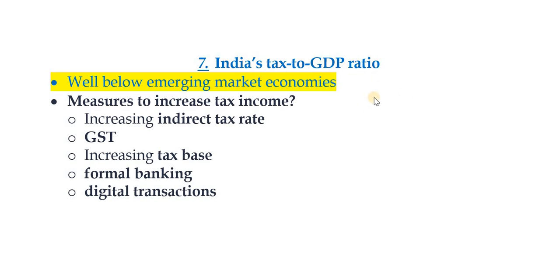India's tax to GDP ratio is well below emerging market economies of the world. Measures to increase the tax to GDP ratio in India include: increasing the indirect tax rate, introduction of GST which will increase the ratio, increasing the tax base by including more people in the tax system, and promoting formal banking and digital transactions.